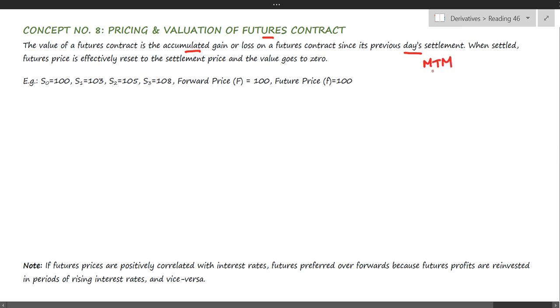And the concept of MTM, that is mark-to-market. When settled, the futures price is effectively reset to the settlement price and the value goes to zero. To understand this, let us take this example. The stock price today is $100, so at T1 the payoff will be 103 minus 100, that is $3.